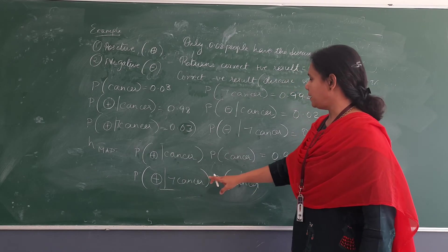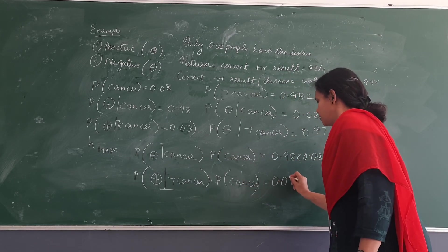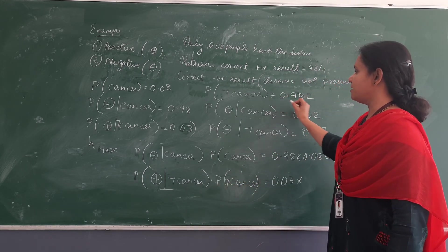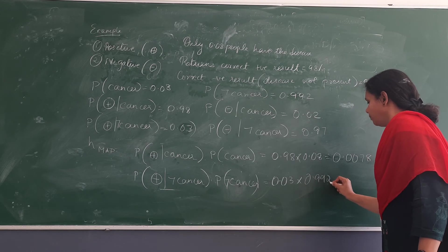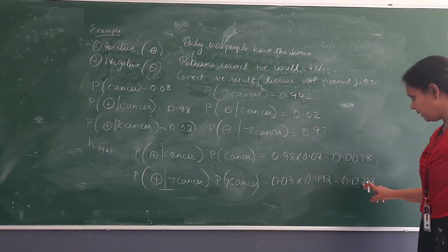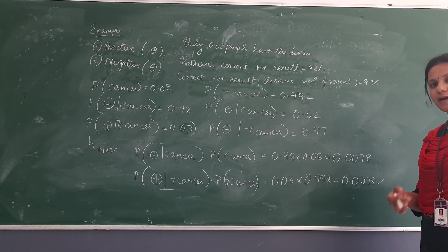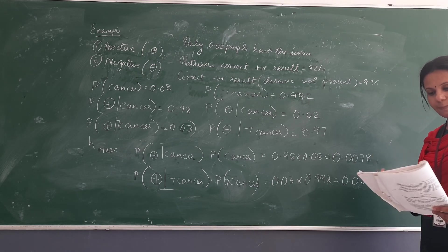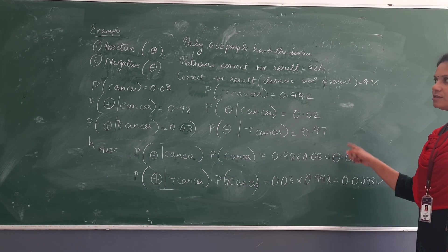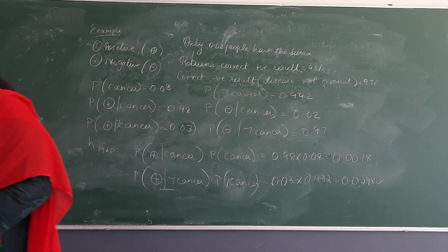Comparing the two values: case one gives 0.0784 and case two gives 0.0276. Case one — having cancer — has a higher probability. That indicates that the patient who has come in with the lab test showing a positive result actually does have cancer. So this is a simple example of Bayes' theorem where we have applied the maximum posterior hypothesis to diagnose the patient.